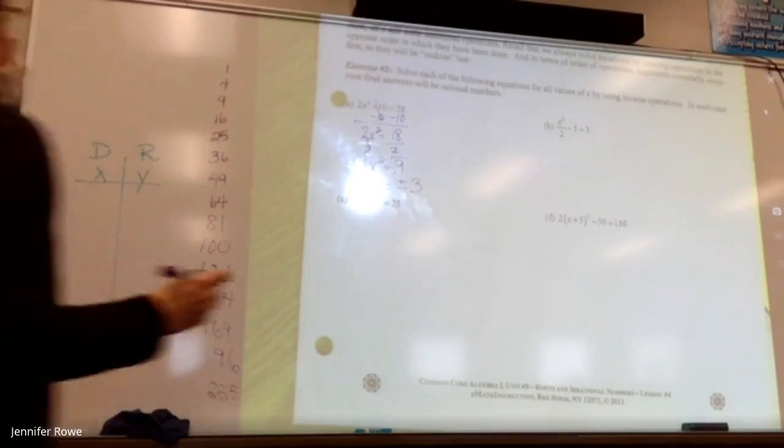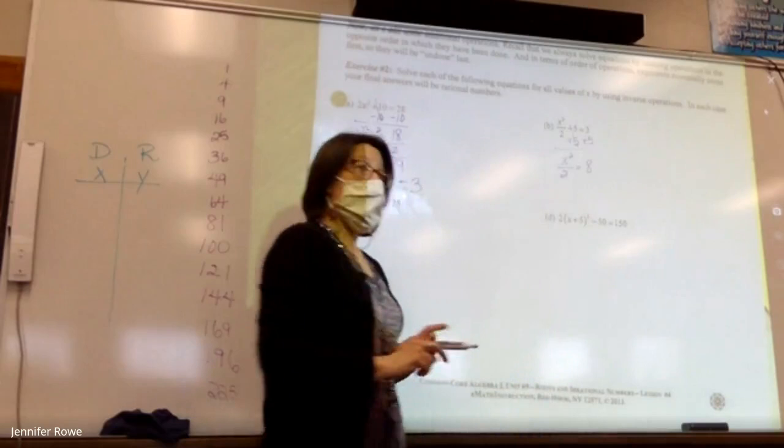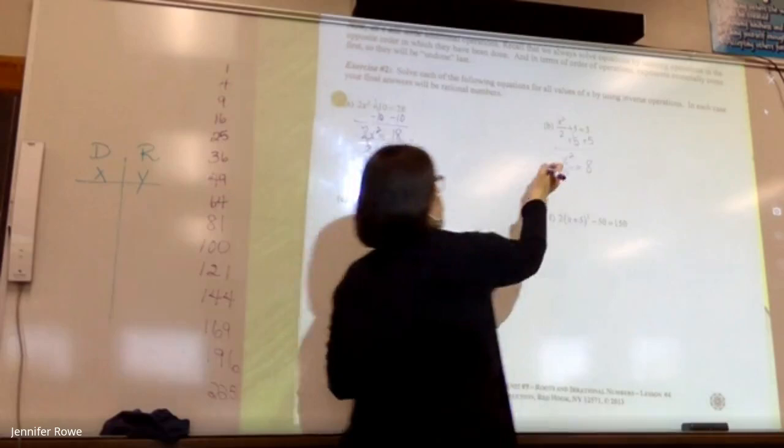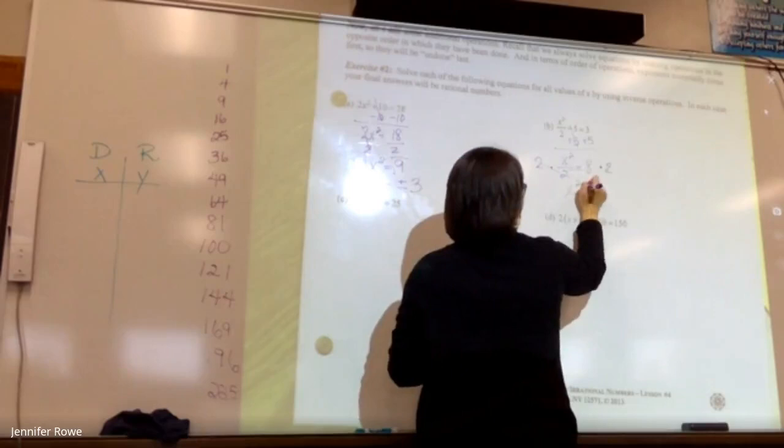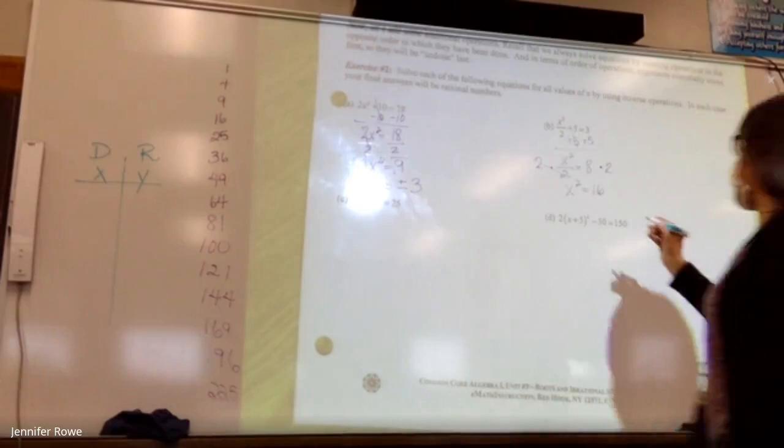What about letter b? Plus five. Okay. Multiply by two because you get rid of dividing by multiplying. Okay, and then take your square root. What's the square root of 16? Positive and negative four.